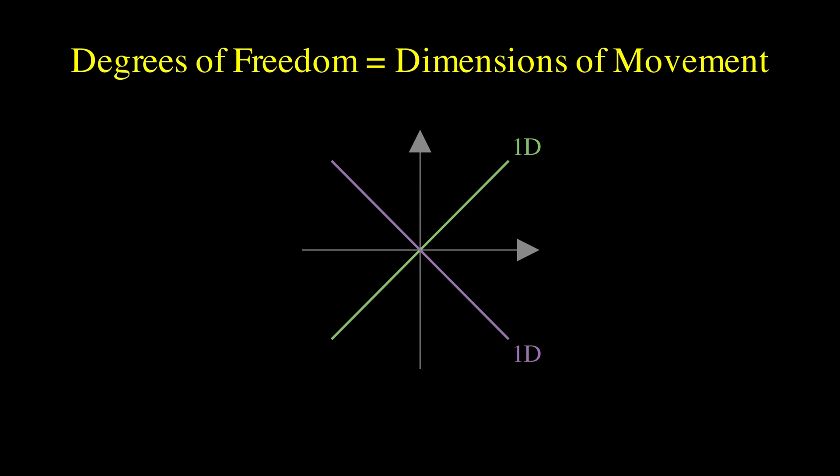The sum to zero constraint on residuals reduces their dimensionality by one, and that's why we divide by n minus one. We're dividing by the actual number of independent pieces of information we have.